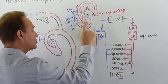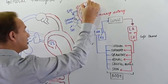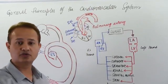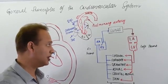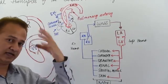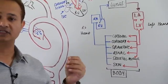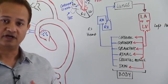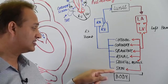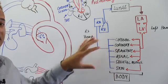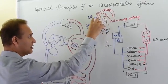The left ventricle pumps blood into the aorta, which is then connected to the systemic tissues. There are six major systemic tissues: cerebrum (head and neck), coronary tissue (the heart itself), splanchnic tissue (GIT — intestines, liver, spleen, etc.), renal system (kidneys), skeletal muscles, and the skin.